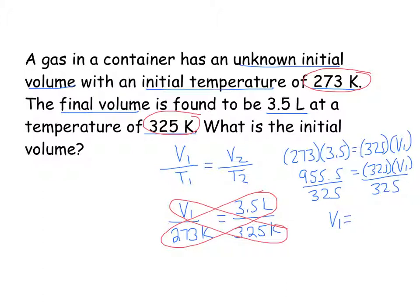My initial volume is found to be 2.94 liters. And that makes sense, because my initial temperature is 273 and my final temperature is 325, so my initial volume should be smaller than my final volume, and 2.94 is smaller than 3.5.